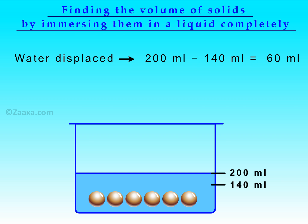Hence, volume of six metal balls is equal to sixty millilitres, or volume of one metal ball is equal to ten millilitres. Thus, we can find the volume of any solid immersed in a liquid by calculating the amount of liquid displaced by it.